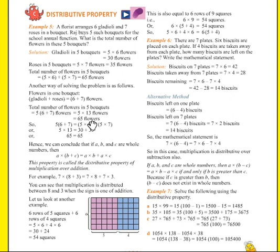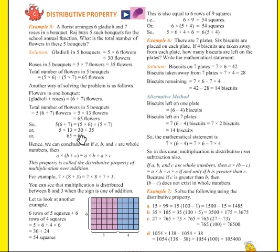So five into bracket (six plus seven) equals five into six plus five into seven. Six plus seven is 13, five thirteens are 65; and five sixes are 30 plus five sevens are 35, giving 30 plus 35 equals 65. Both methods give the same answer: 65. Hence we conclude that if a, b, and c are whole numbers, then a into (b plus c) equals a into b plus a into c. This property is called the distributive property of multiplication over addition.